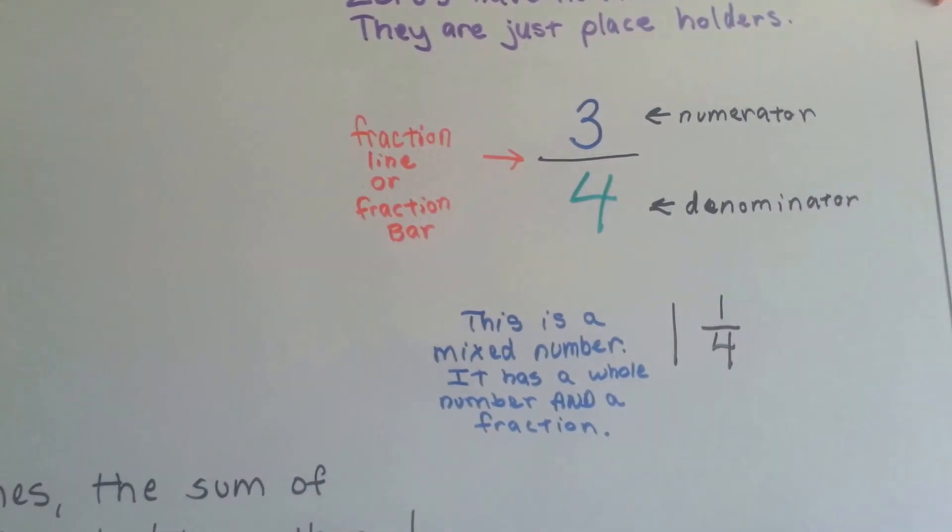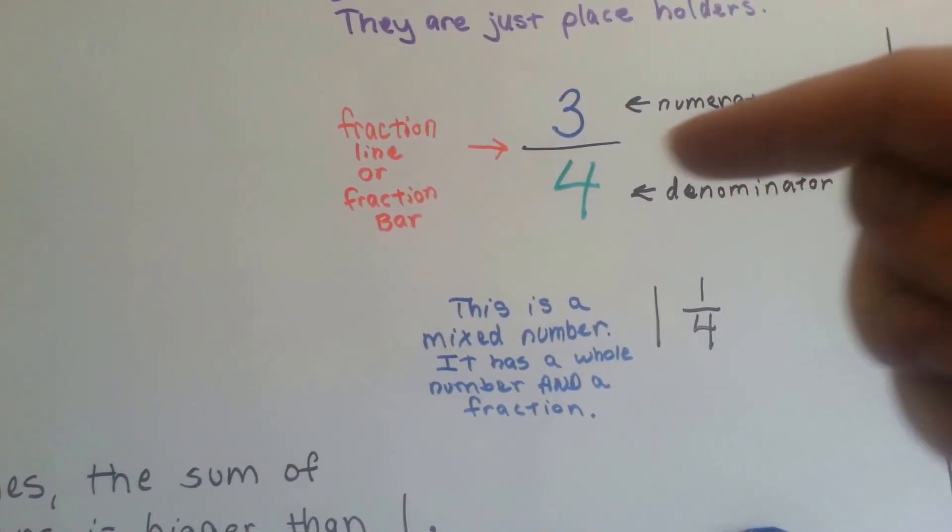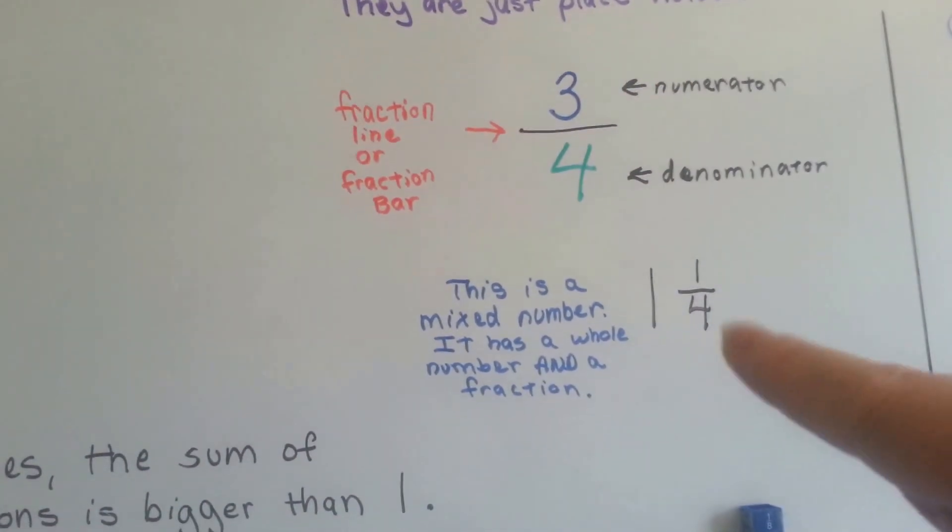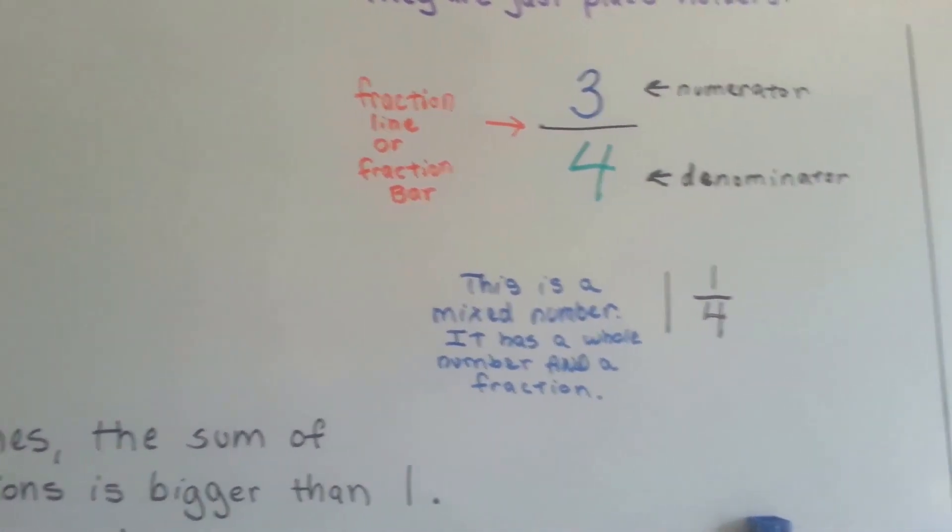So just as a little review, the top is the numerator, the bottom is the denominator. This is the fraction line or fraction bar that splits them. And this is a mixed number. It's a whole number with a fraction.